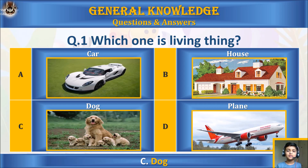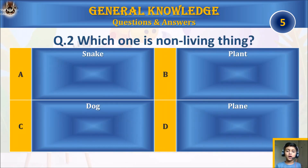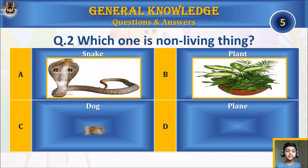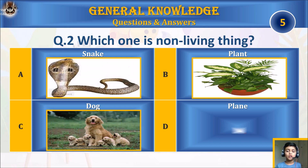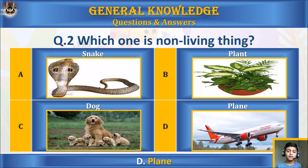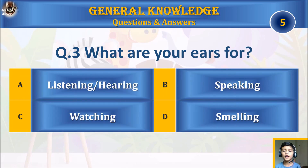Question two: which one is not a living thing? A) snake, B) plant, C) dog, or D) plane? Your time starts. The answer is D) plane.